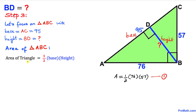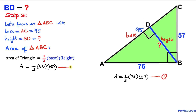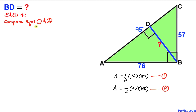Using the triangle area formula, area equals one half times base times height. In our case, area equals one half times 95 times BD. Let's call this equation number two.